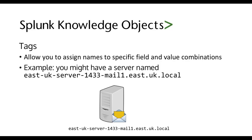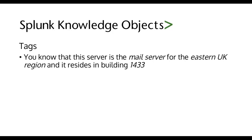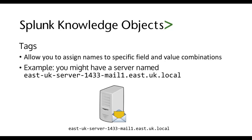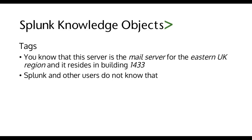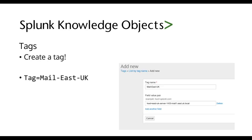For example, this is the mail server for the Eastern UK region and it resides in building 1433, and that's why it has that weird name with 1433 in it. Other people using Splunk probably don't know that and don't want to type that in every time. So create a tag that has the field value pair host equals the full server name.